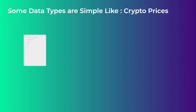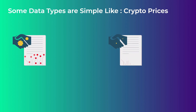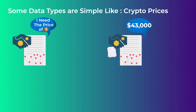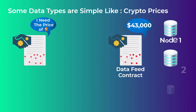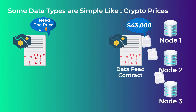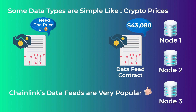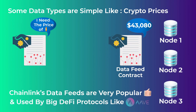Some types of data are simple, like crypto prices, and many smart contracts need to access this data in a fast and cheap way. So crypto prices are always available on a smart contract on the blockchain called a data feed contract. Any smart contract that needs price data simply sends a message to this contract and gets the requested data back very quickly and cheaply. The data on this feed contract is always updated by multiple oracle nodes, and these data feeds are widely used by popular DeFi protocols like Aave.